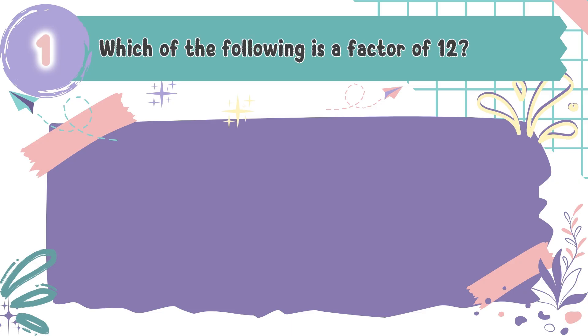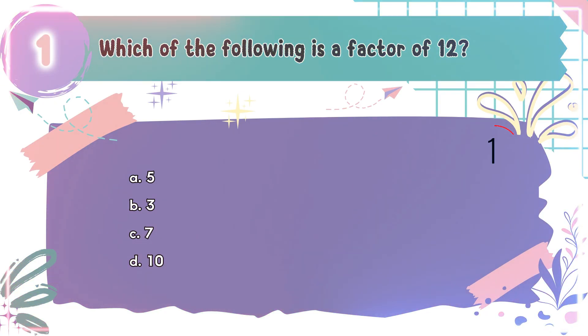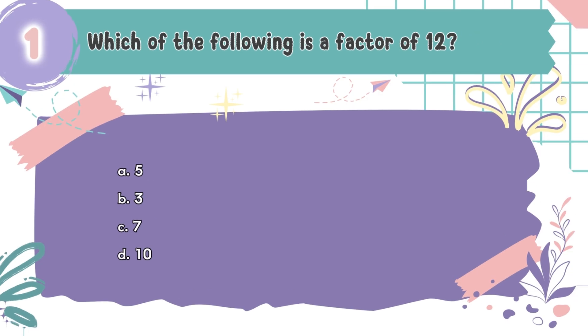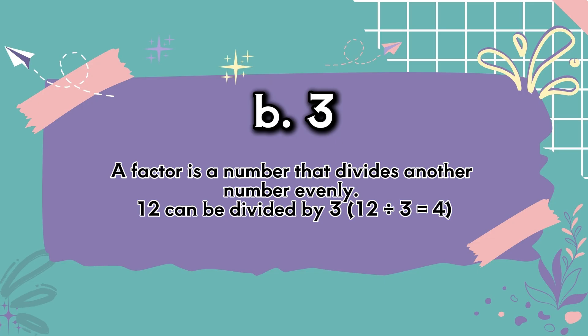Question number 1: Which of the following is a factor of 12? The choices are A: 5, B: 3, C: 7, D: 10. The correct answer is B, 3. A factor is a number that divides another number evenly. 12 divided by 3 equals 4.